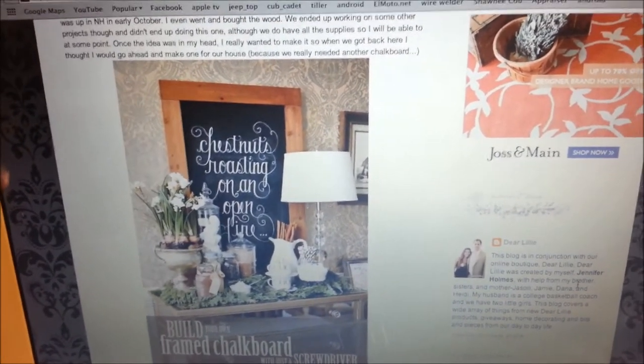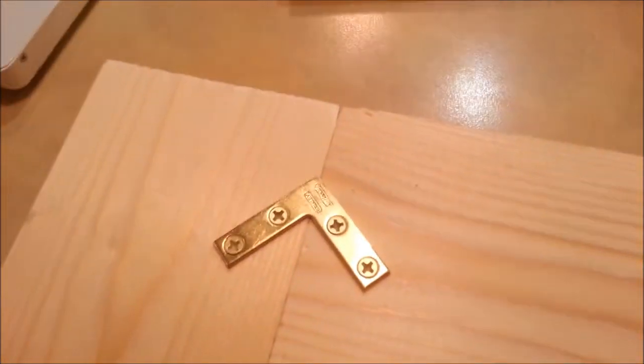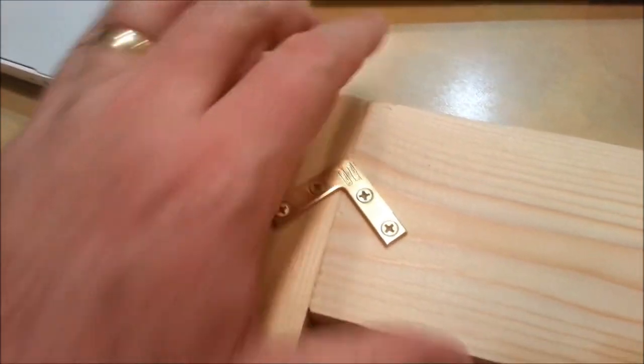This is the mending brace I was talking about that she recommended to use. The only problem is it only has one screw on each piece of the wood, which makes it a little bit weaker. So here I put the corner brace on at an angle, and having two screws in there, this is going to keep it from moving quite as badly as just one screw on each side.